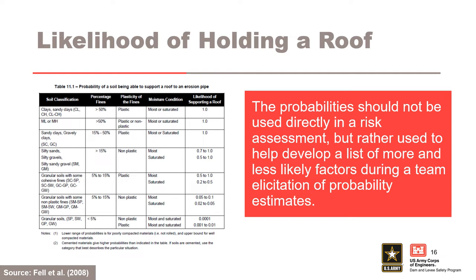As previously mentioned, the presence of a structure or hard layer in soil properties are the primary factors to consider in roof formation. This table is from Fell et al. 2008 and summarizes the likelihood of holding a roof for various materials. Soils with a fines content greater than 15% are much more likely to support a roof than soils with a fines content less than 15%. The probabilities from this table should not be used directly in a risk assessment, but rather used to help develop a list of more and less likely factors during a team elicitation of probability estimates.